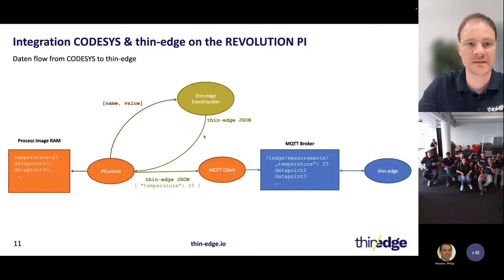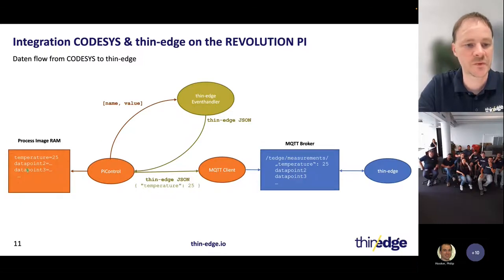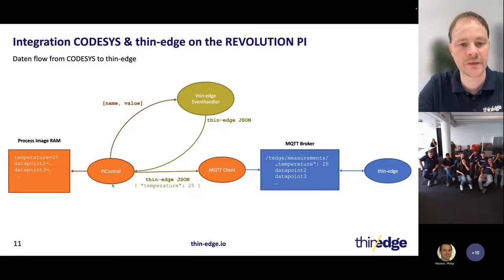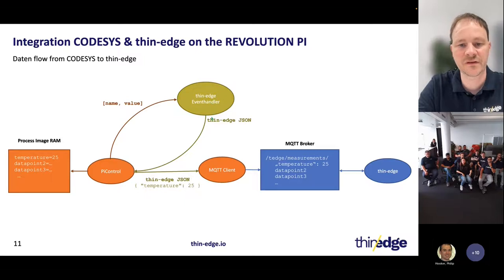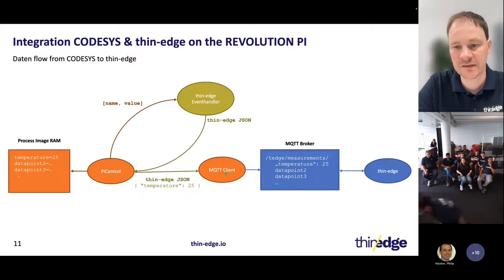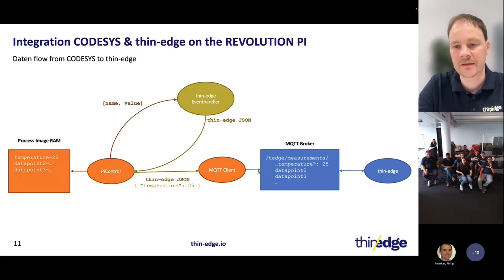In the data flow: the process image contains example data points such as temperature with value 25. PI Control accesses the process image and on a change sends the name and value to the event handler, which returns the corresponding JSON string. Then PI Control uses its MQTT client to publish that value — in this case, temperature with value 25 — to the telemetry measurements topic, and ThinEdge takes care to send that data to the cloud.